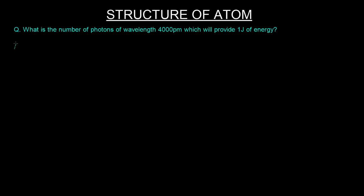In this question we are supposed to find out the number of photons that will provide one joule of energy. We are given the wavelength of 4000 picometers, which is 4000 × 10^-12 meters.